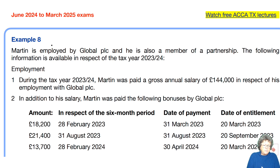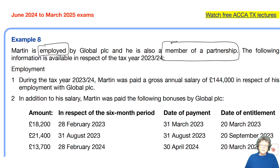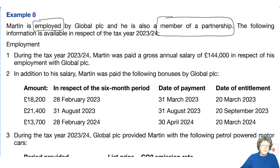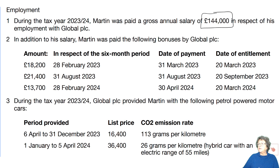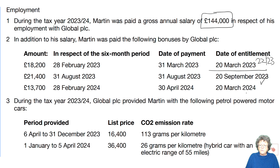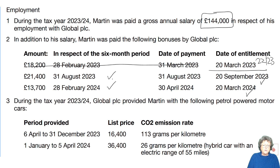Martin is employed and also has a partnership. During the year he had a salary of £144,000 and bonuses. We decide which bonuses by date — one was in 2022/23 so we can ignore it, and two fall in 2023/24 so we add those in. Don't forget to put the dates on them so the marker can see you know what you're doing.